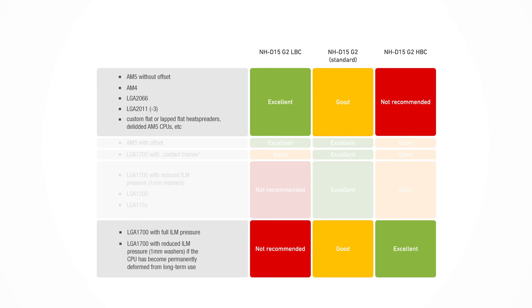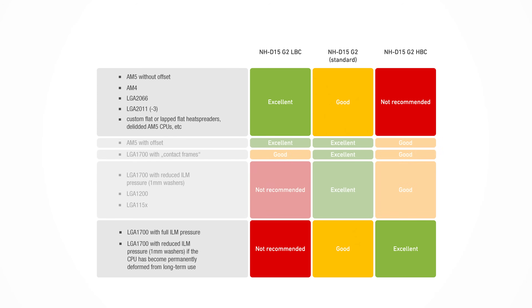However, for the other cases described in this video, the specialized LBC and HBC versions can offer an extra 1 to 2 degree edge, which makes them an attractive option for customers who want to get the best possible results in these particular configurations and don't mind trading in some versatility. If you would like to get an even deeper look into this topic, you can find further additional guides and resources on the Noctua website.